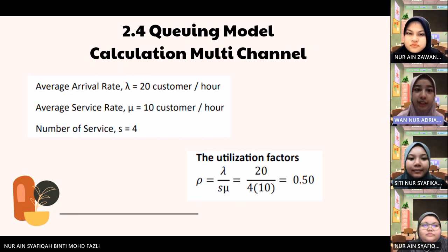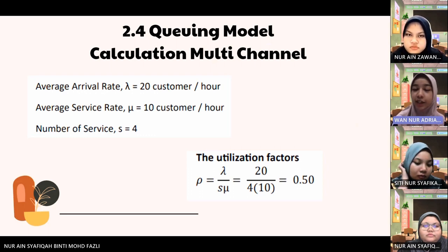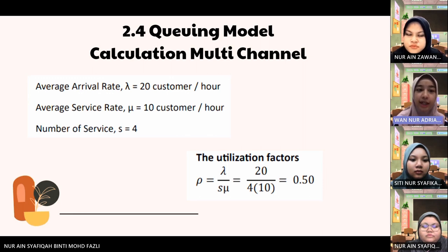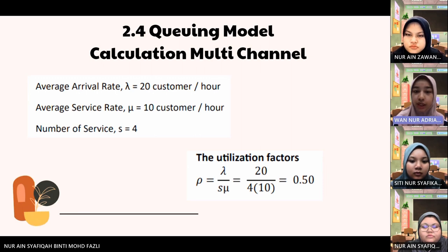For the queuing model, I will tell you about the calculation for this multi-channel system in Akon Jaya Supermarket in Machang. The average arrival rate, lambda, is 20 customers per hour. The average service rate, mu, is 10 customers per hour. The number of servers, S, is 4. For the utilization factor, rho, when we substitute into the formula given, we get 0.5.